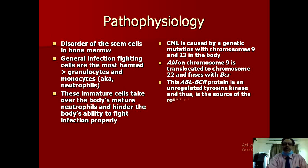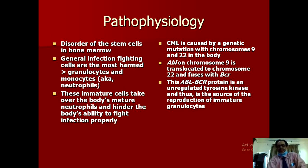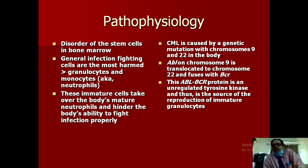CML is caused by a genetic mutation involving chromosomes 9 and 22. The ABL gene on chromosome 9 is translocated to chromosome 22, where it fuses with the BCR gene. This ABL-BCR fusion protein is an unregulated tyrosine kinase, which is the source of reproduction of immature granulocytes. This protein takes control of the entire mechanism of production of the chronic myeloid leukemia.